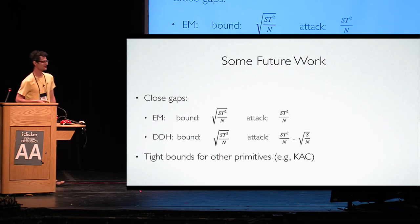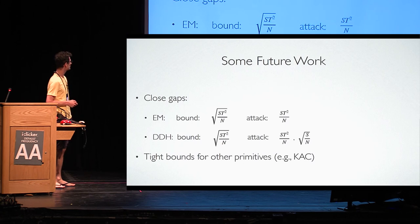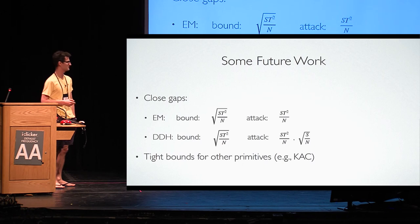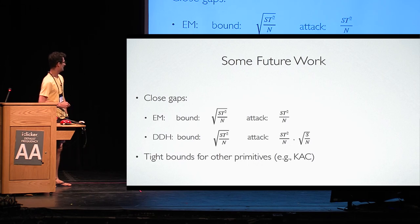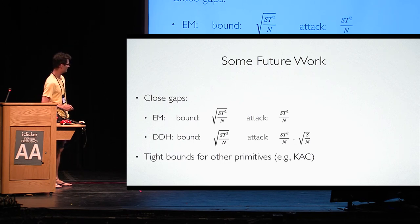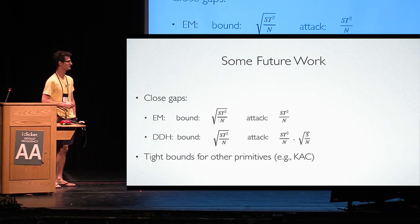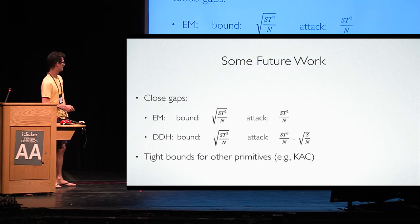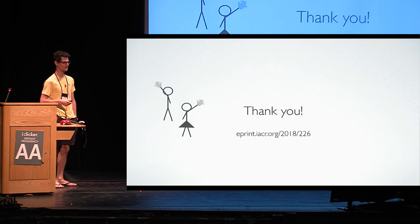There are interesting open problems. For the Even-Mansour cipher, we can only prove a bound of √(s·t²/n), while the best attack achieves s·t²/n—so there is a challenge of removing the square root. Similarly, for decisional Diffie-Hellman the best known bound is √(s·t²/n) but the best attack achieves s·t²/n. It would also be interesting to derive non-uniform bounds for full key-alternating ciphers. That's all I wanted to say. Thank you.